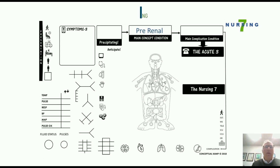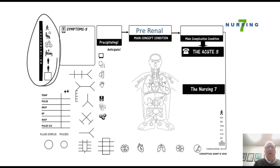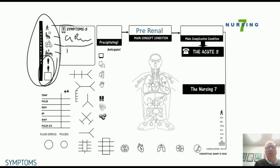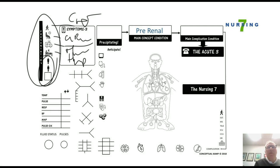Let's wrap it all together using the concept map. A patient with acute kidney injury can present anywhere — walking around, in a doctor's office, arriving by ambulance, or already on the floor — regardless of sex or age. The symptoms of pre-renal failure include decreased urine output, and the patient may have hypovolemia, hypoperfusion, or CHF. The precipitating factors are the onset of the Triple H's, and the main complication is progression to intra-renal problems.